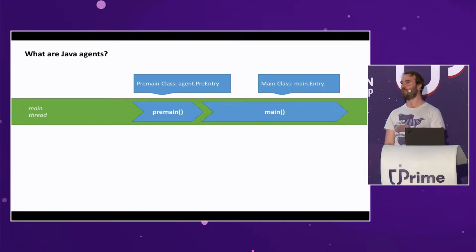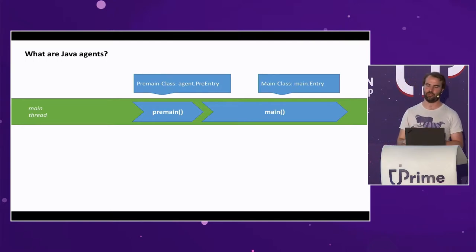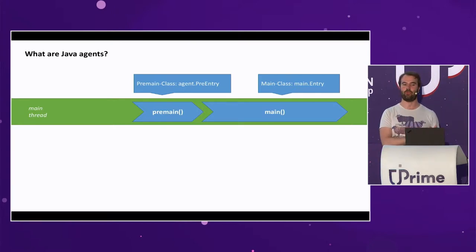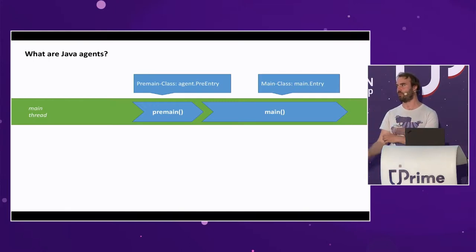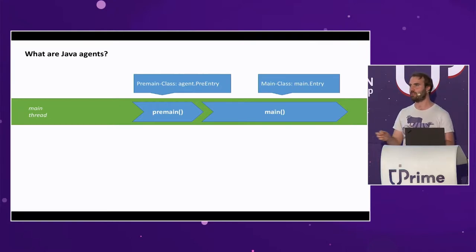A Java agent is another entry point. It's nothing but a jar file with a manifest file, only that instead of public static void main, you type public static void premain. An agent also takes a string argument — a single one, not an array. As the name suggests, premain will be executed before main on the main thread. In essence, a Java agent is a small program you can add to an existing program without changing it, executed before the original program.